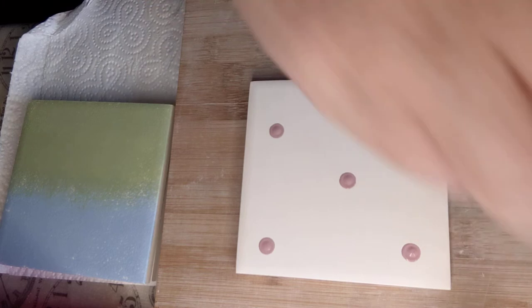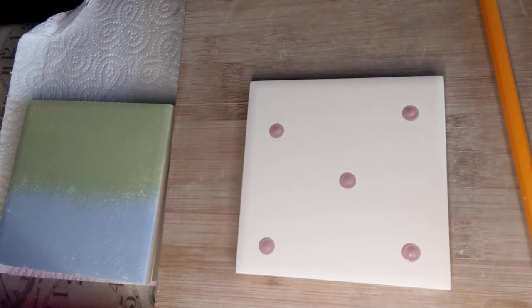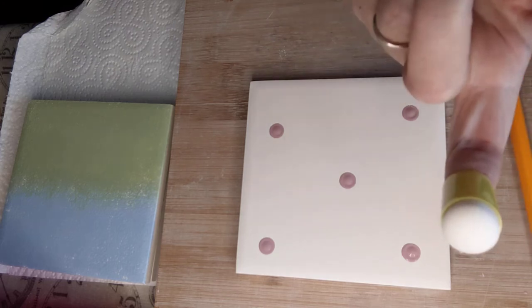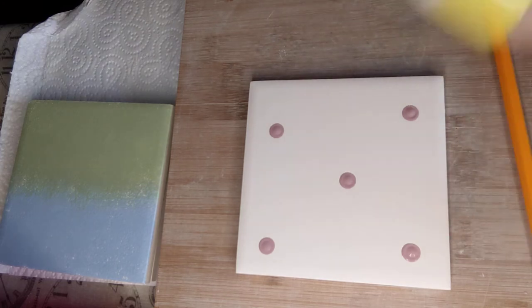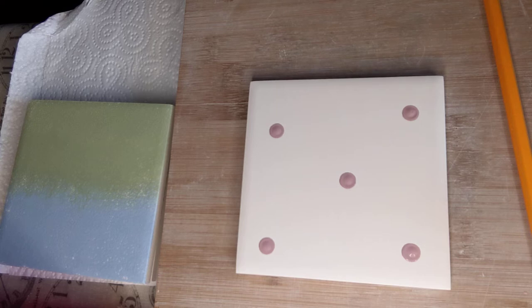If you want to do a larger circle, I've got a little sponge dauber that fits on the end of your finger. Dip it in the paint again.